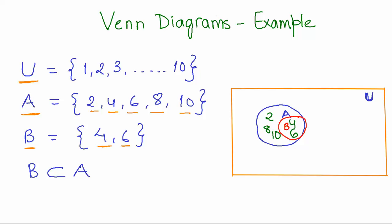What are the other elements that we have? We have 1, 3, 5, 7, and 9. So this is how we would represent a set using a Venn diagram.